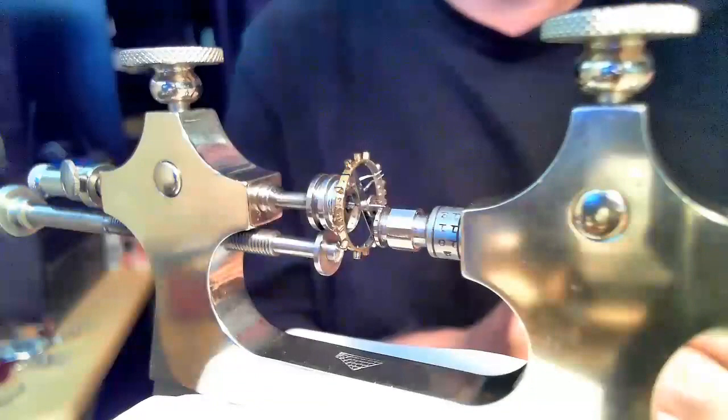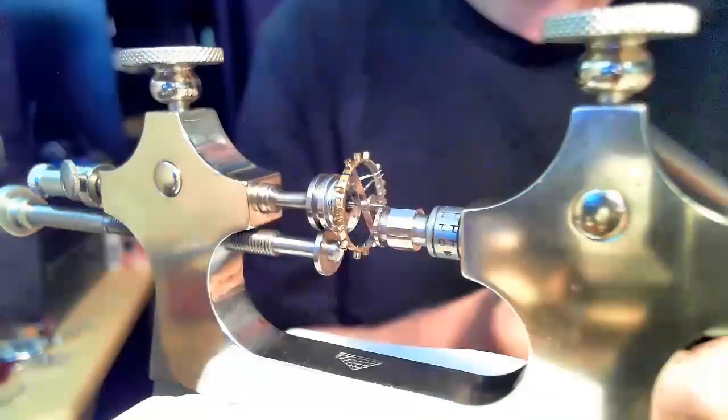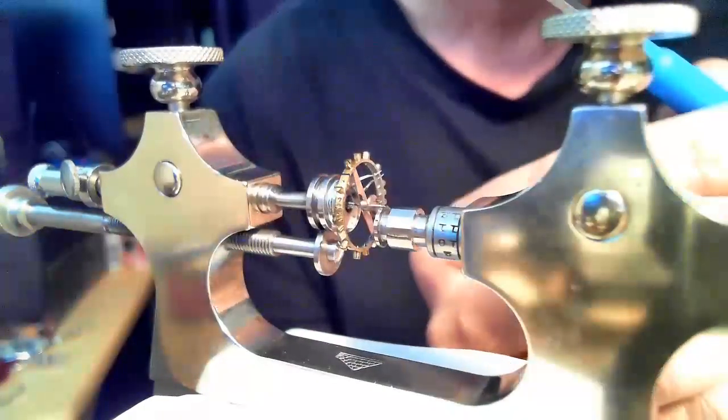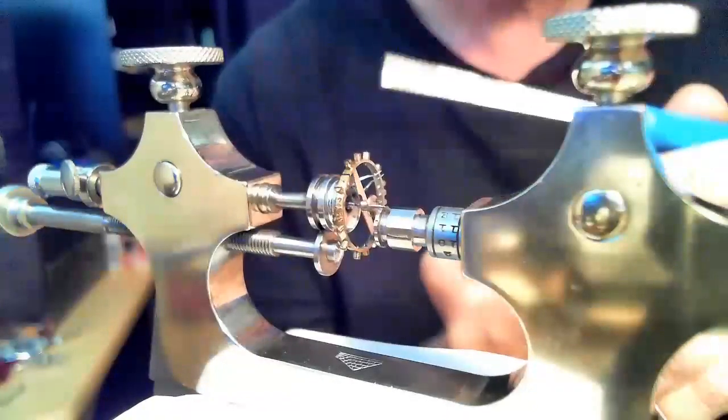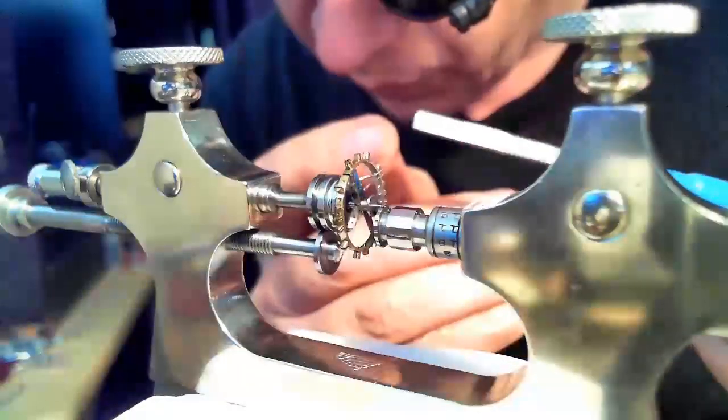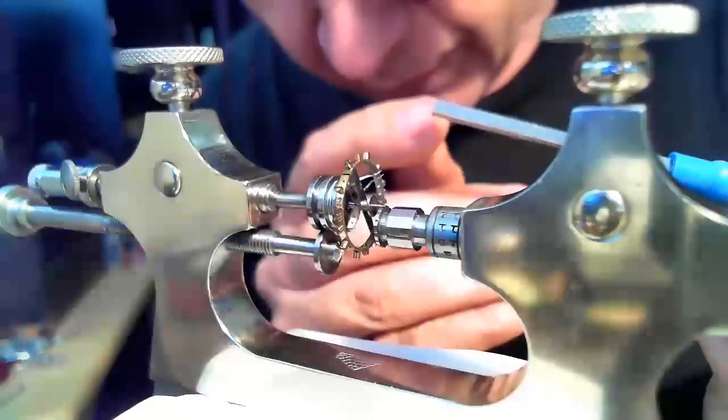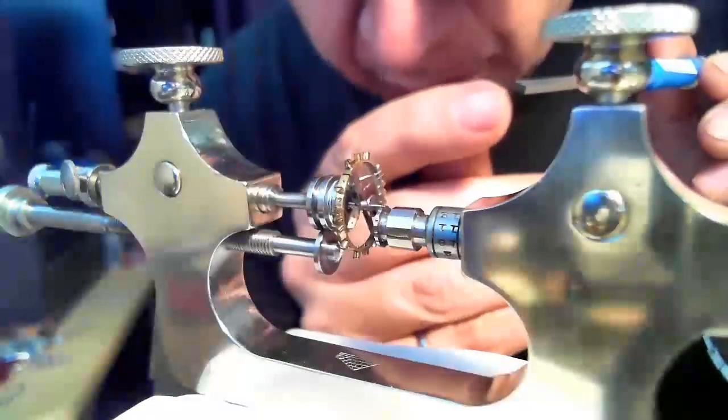And then once I've got that done, this is my burnishing tool here. I make sure that the round part, the round edge of the tool, sort of a rounded corner there,